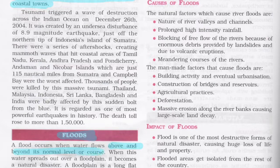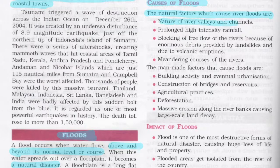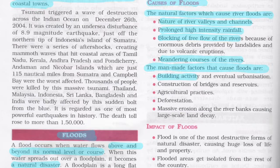A flood occurs when water flows above and beyond its normal level or course. When this water spreads out over a floodplain, it becomes a natural disaster. Natural factors causing river floods include the nature of river valleys and channels, prolonged high-intensity rainfall, blocking of free flow of rivers, and meandering courses of rivers. Man-made factors include building activity, urbanization, construction of bridges and reservoirs, agricultural practices, and deforestation.